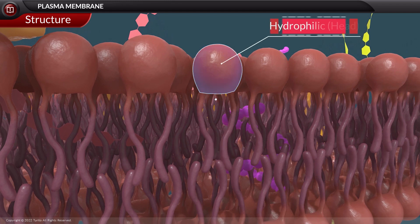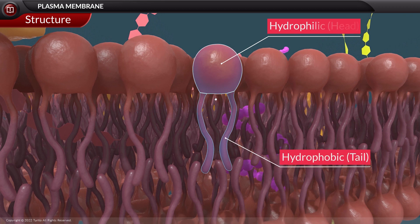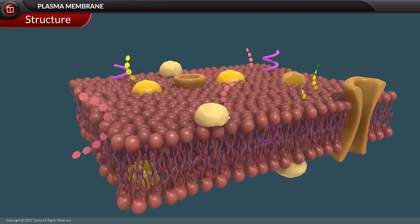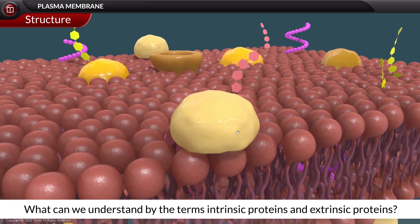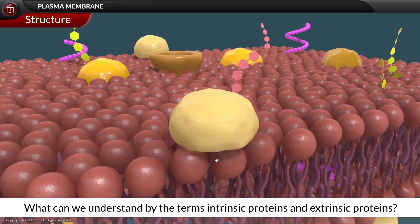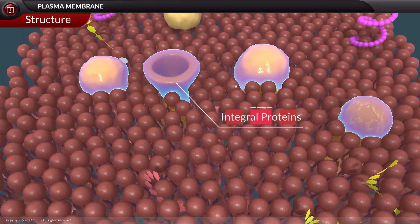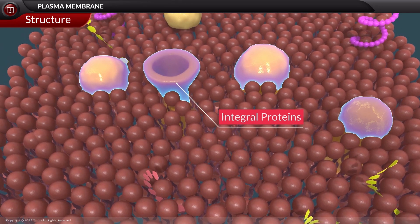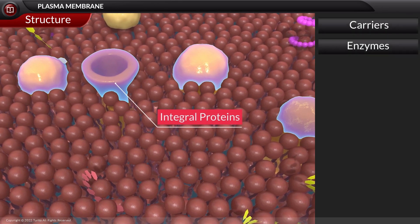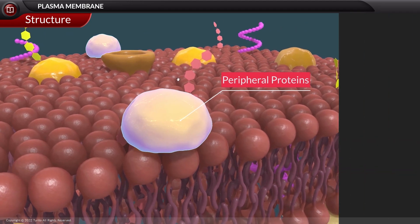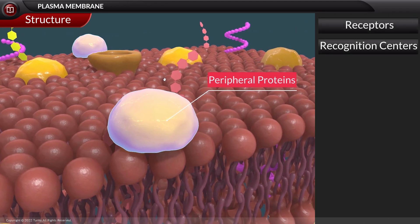The lipids are usually phospholipids having a head and a tail, in which hydrophilic phosphate heads are oriented outwards and hydrophobic tails are facing inwards. The proteins are of two types: intrinsic and extrinsic. Intrinsic proteins, also called integral proteins, are embedded in the lipid layer and act as carriers, enzymes, and transport channels. Extrinsic proteins are peripheral proteins loosely bound to the membrane and act as receptors and recognition centers.